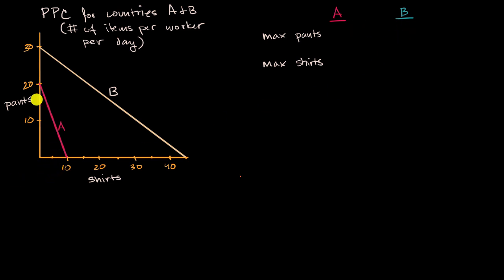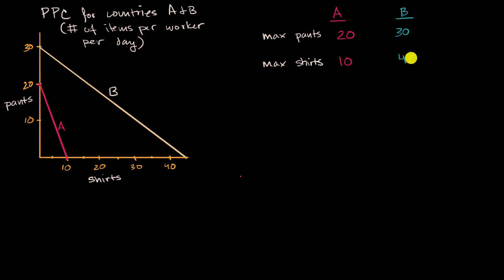In country A, the maximum pants is 20, and the maximum shirts, if they didn't make any pants, is 10. In country B, the maximum pants are 30, and the maximum shirts is about 45. Now from either these production possibility curves or from this output table, because we have a constant opportunity cost — these production possibility curves are straight lines with a fixed slope — we can calculate the opportunity cost.